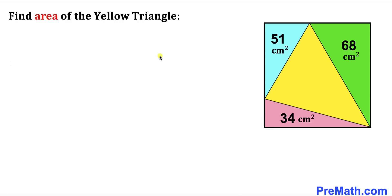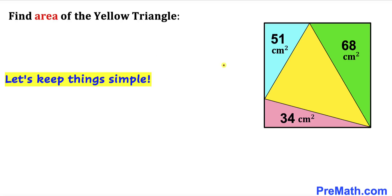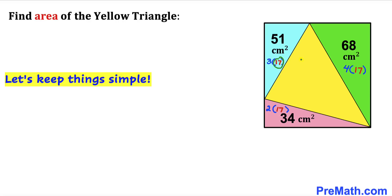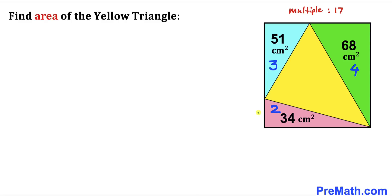Let's get started and make an observation. We can see that 51, 68, and 34 have one thing in common: 51 could be written as 3×17, 68 as 4×17, and 34 as 2×17. So all these areas are multiples of 17. To simplify, I'm going to write 51 as 3, 68 as 4, and 34 as 2, leaving the factor of 17 aside — we'll multiply back by 17 at the end.